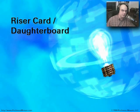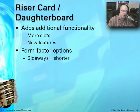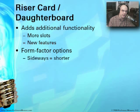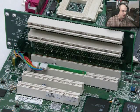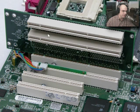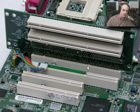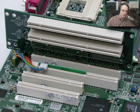Many systems have riser cards, sometimes called daughter boards, which add functionality and more slots to a device. They're designed for low-profile, short systems — they allow you to turn interface cards sideways instead of plugging them in straight up and down, saving vertical space. Here's an example of a daughter board in my motherboard: with the riser card in place, interface cards plug in sideways, saving room for tall cards or those with ribbon cables, and allowing the system to fit into a rack in a data center.